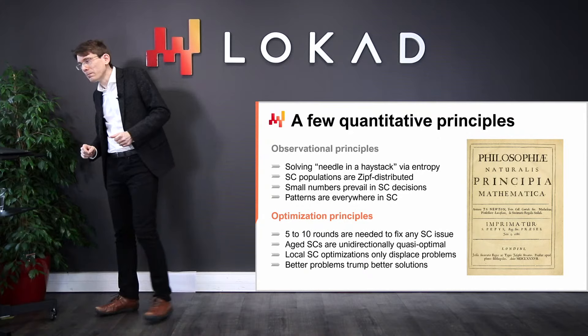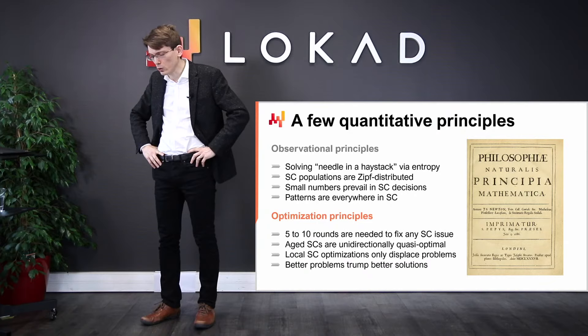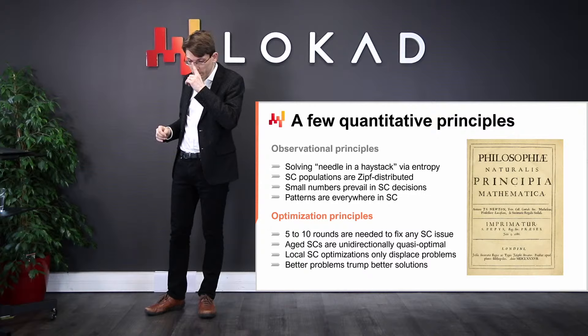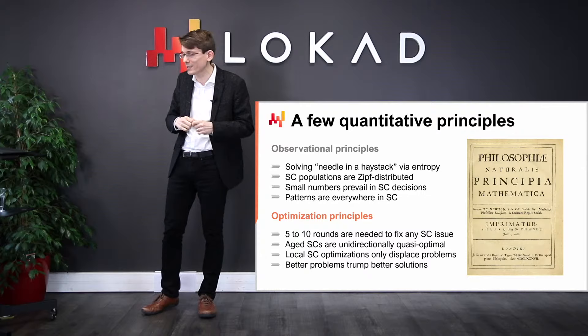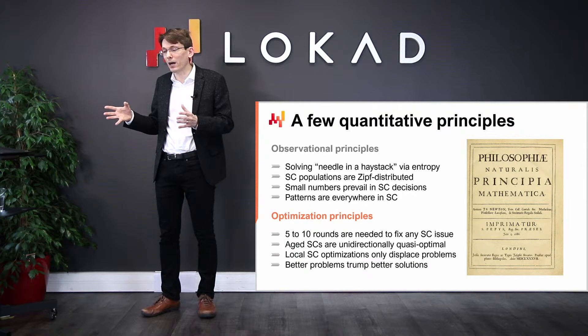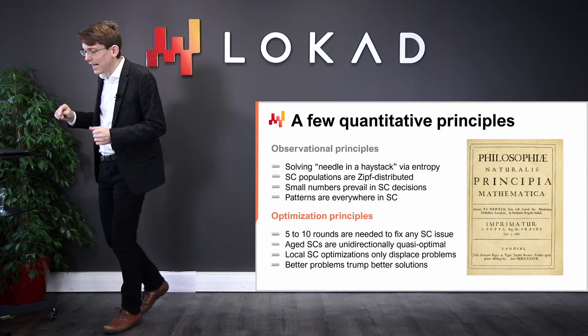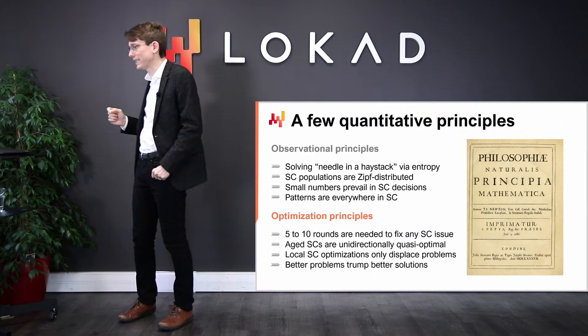That brings me to the second series of principles. So far we have seen four principles that relate to how I should look at my supply chain: it's an indirect observation via enterprise software, we need to sort out what is relevant from what is not, entropy is very practical, distributions are ZIPF all over the place, it's always about small numbers, and despite small numbers, we still have patterns. Now the question is how do we act? Mathematically speaking, when we want to decide the best course of action, we do an optimization of some kind.